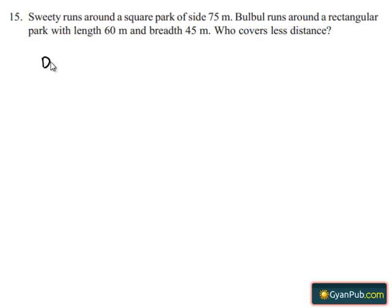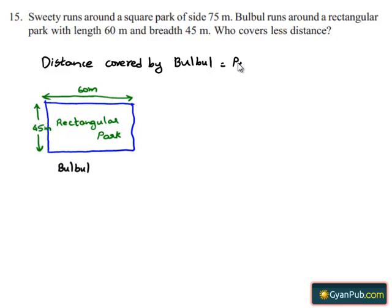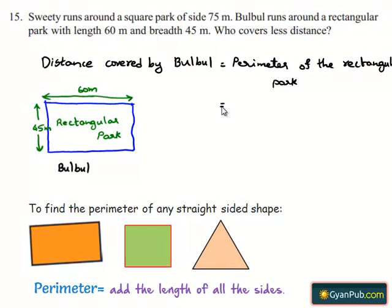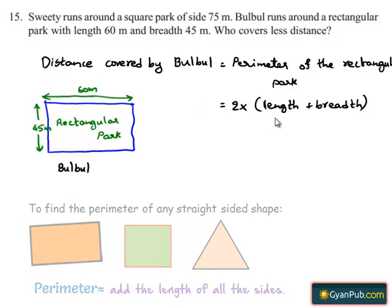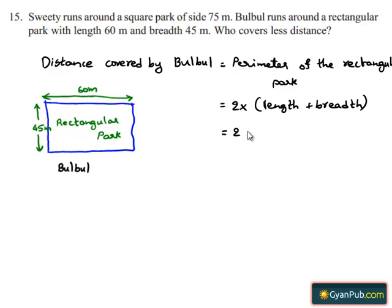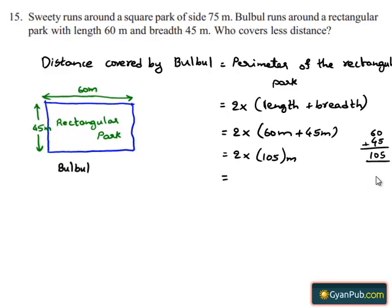Similarly, distance covered by Bulbul is equal to the perimeter of the rectangular park, which is equal to 2 times the sum of length and breadth. Since we know that perimeter of a rectangle is 2 times the sum of length and breadth, this is equal to 2 times 60 meters plus 45 meters. Adding 60 and 45, we get 2 times 105 meters. Multiplying 105 with 2, the distance covered by Bulbul is 210 meters.